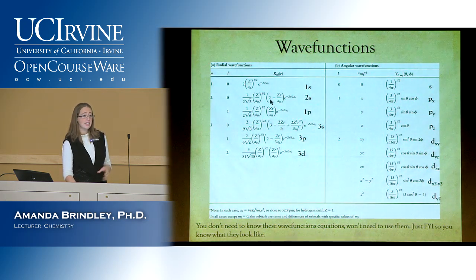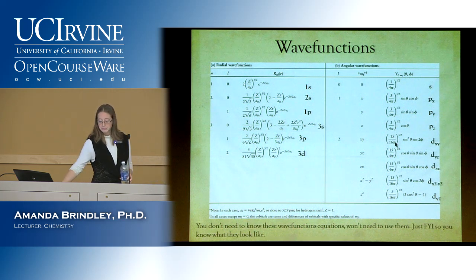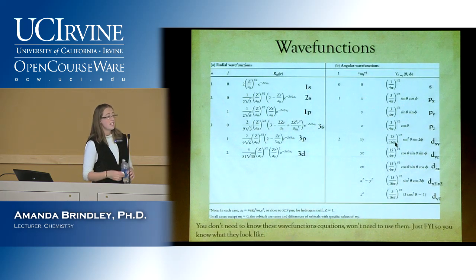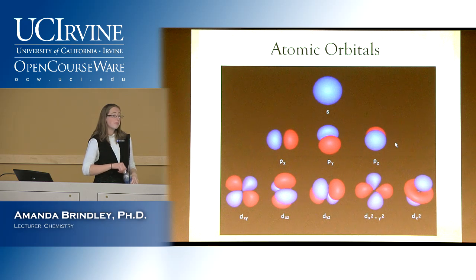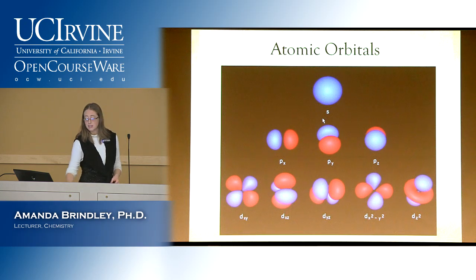We're going to use what the orbitals look like and do electron configurations, knowing in the back of our minds that this is where they come from. For today we'll end here. Next class, we'll start on quantum numbers, then move into electron configurations, energy level diagrams, and related topics.